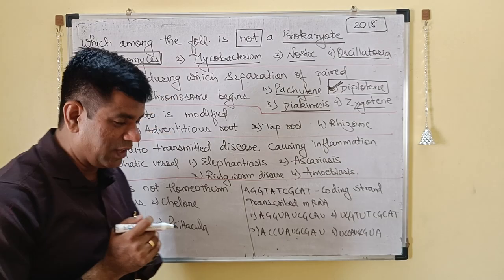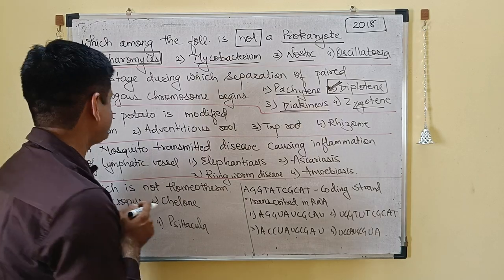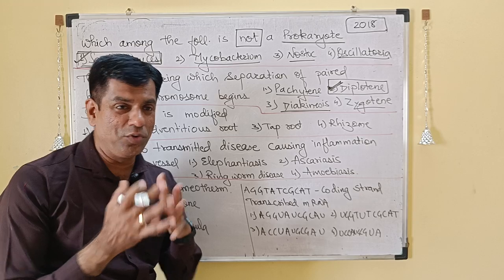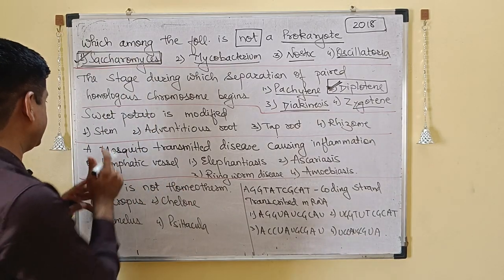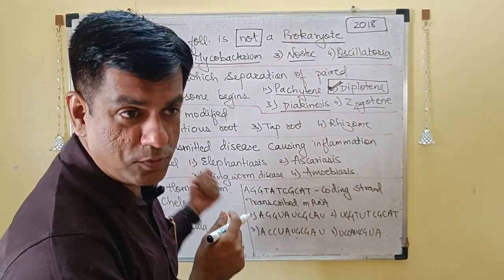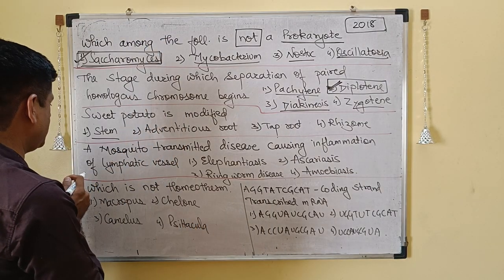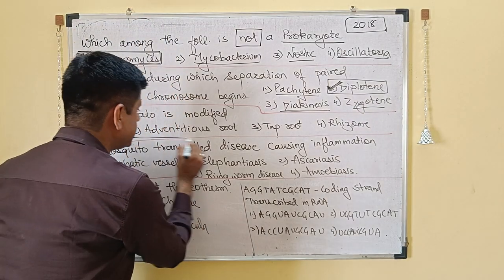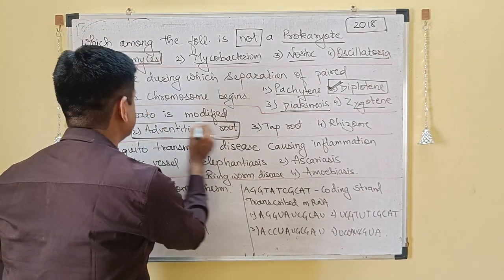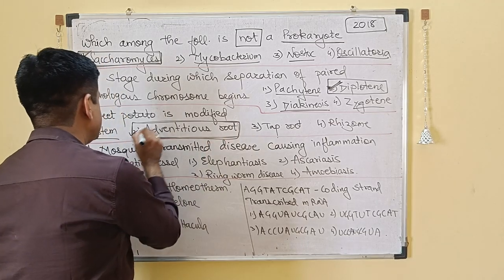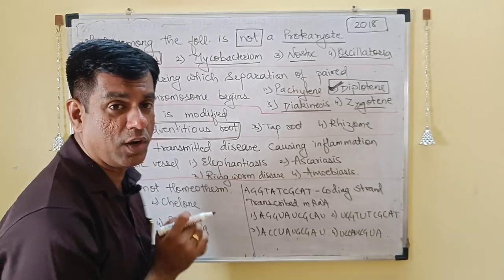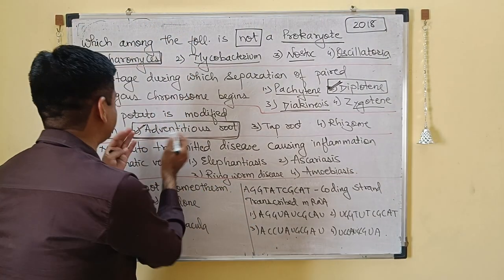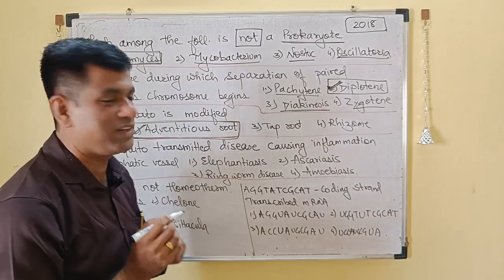Sweet potato — the one which you eat during fasting. We eat more in fast than on a regular day, I suppose. So sweet potato is a modified what? Is it a stem? No. The elder brother of sweet potato — potato — is what is called a stem modification. So potato is a modification of your stem. Sweet potato is an adventitious root — yes, it is a modification of adventitious root, for storage of food.